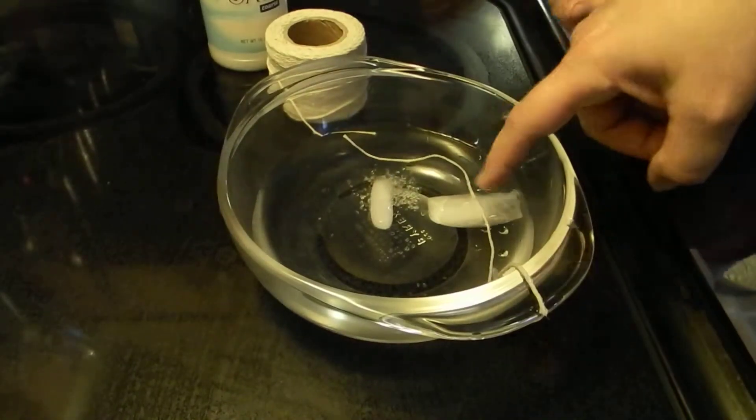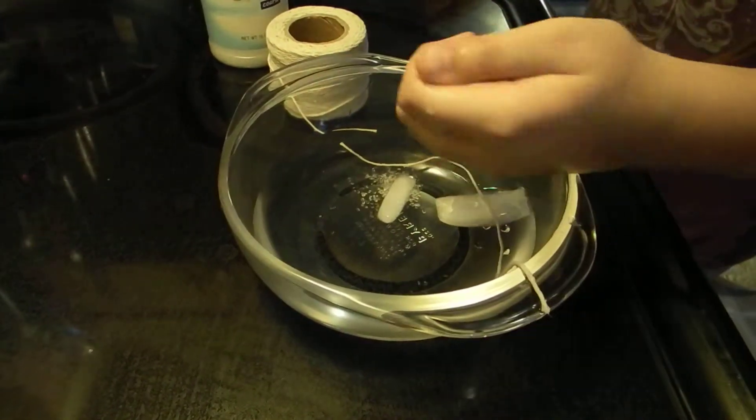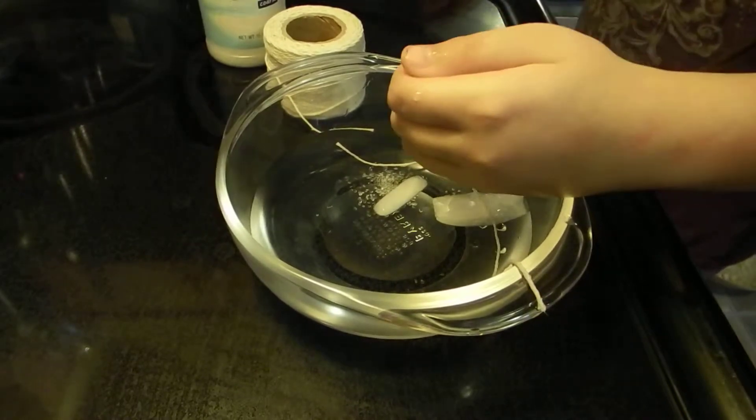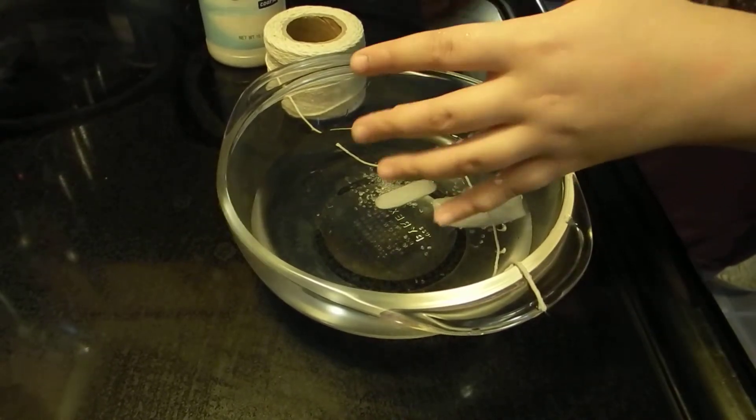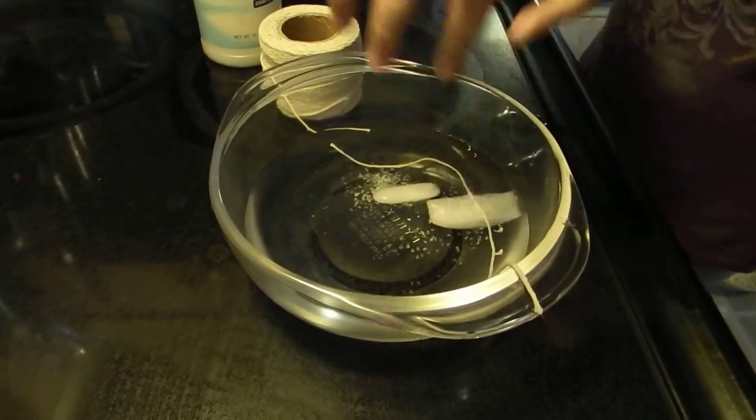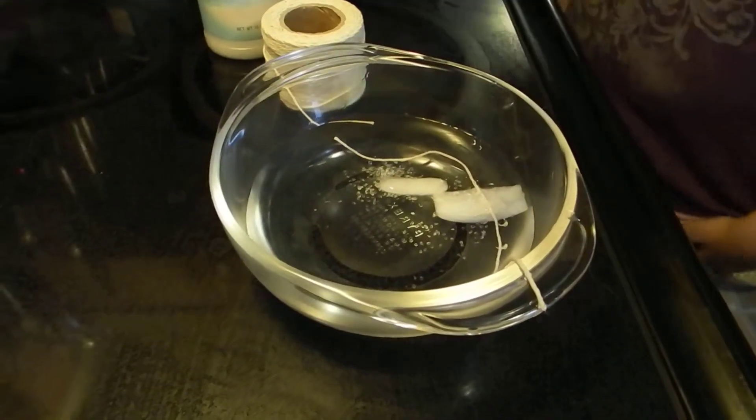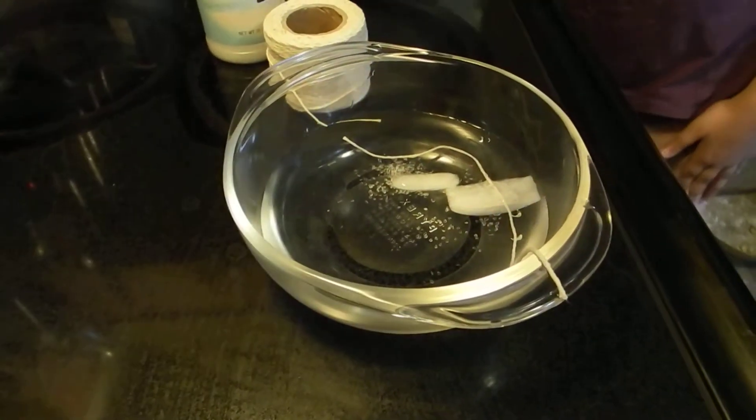All right, try it. Sprinkle your salt right there. Sprinkle it around your string. Basically, all you're doing is introducing a contaminant. It's melting the ice and it's freezing around the string.